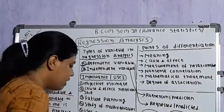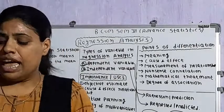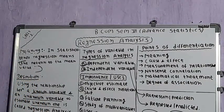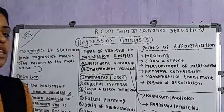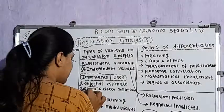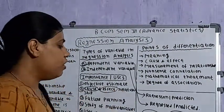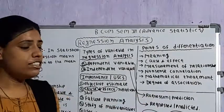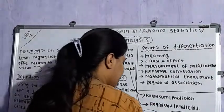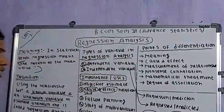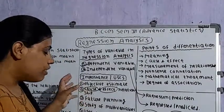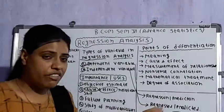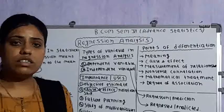The second importance is cause and effect relationship. Regression analysis helps us understand the cause and effect relationship when studying the nature of relationship between two variables — which one is cause and which one is effect. In our example of price and demand, regression analysis tells us that price is the cause and demand is the effect, because due to change in price, demand gets changed.